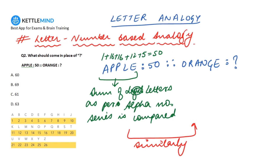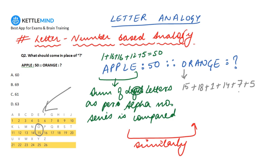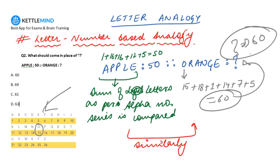Applying the same logic to 'orange': O is 15, R is 18, A is 1, N is 14, G is 7, E is 5. Now adding: 15 plus 18 is 33... then plus 1 is 34, plus 14 is 48, plus 7 is 55, and plus 5 is 60. So according to this logic the question mark should be replaced with 60.